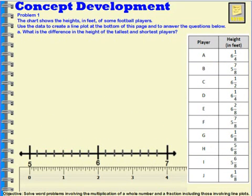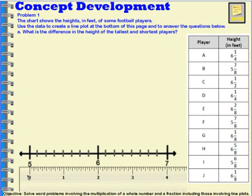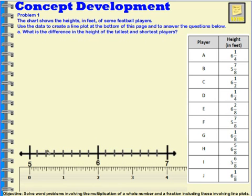Now in this lesson, we're going to take some data that was collected about the height of some players on a team, and we're going to create a line plot with them. I've drawn my line plot using a ruler to make sure the spacing was all even. When you use a ruler, don't just make the space between each number one inch — make it two inches so you can spread your line plot out. If you just make it one inch, it gets a little hard to put your x's.